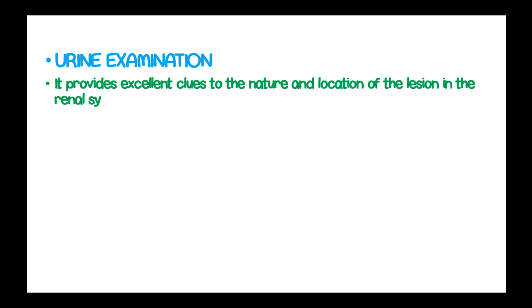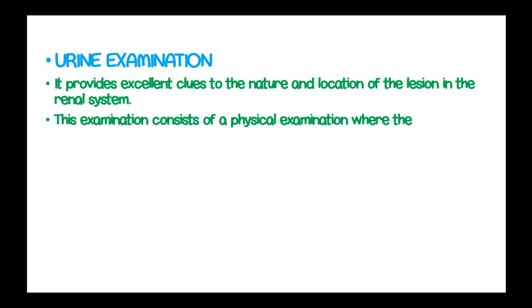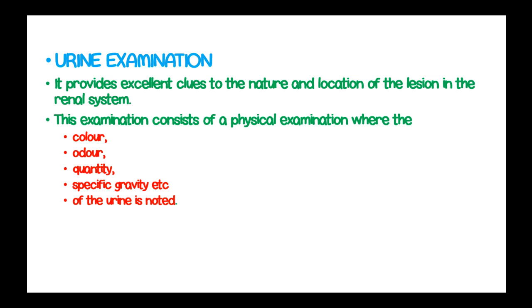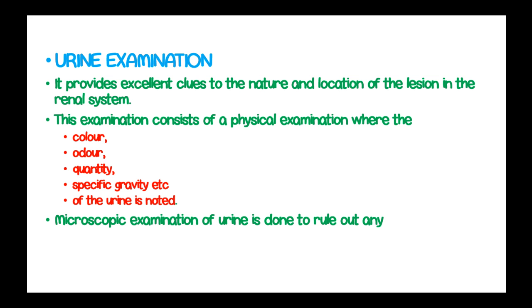Urine examination provides excellent clues to the nature and location of the lesion in the renal system. This examination consists of a physical examination whereby the color, odor, quantity, and specific gravity of the urine are noted. Microscopic examination of urine is also done to rule out any casts, red blood cell casts, and crystals.